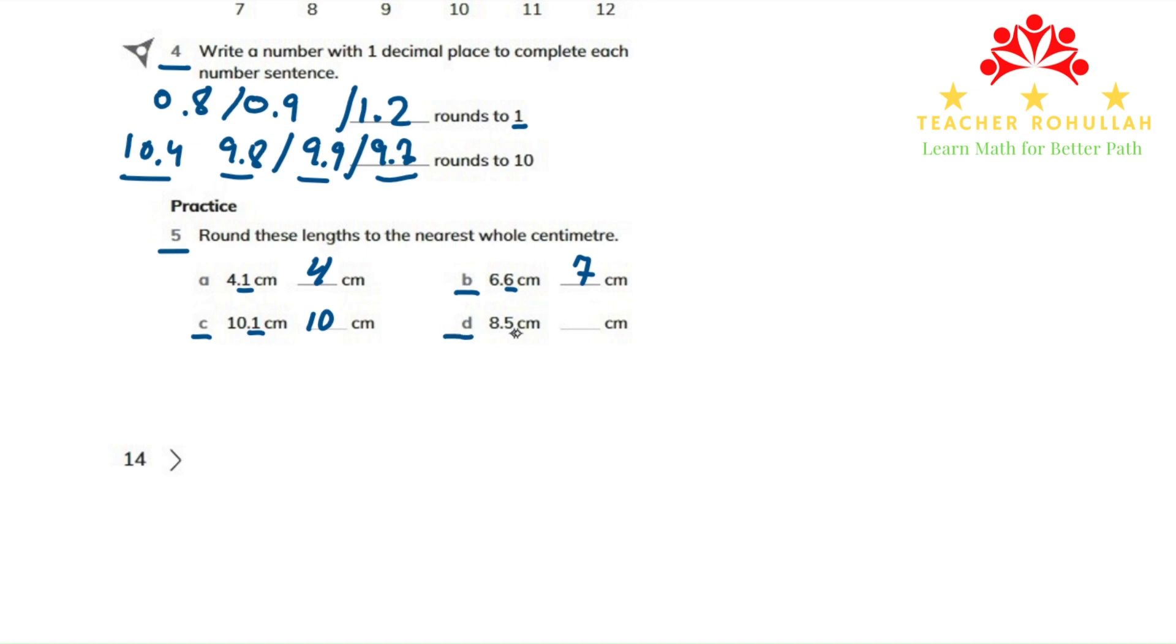In the last part, which is part D, 8.5 rounds to nine because the tenths digit is five or more, which rounds up.